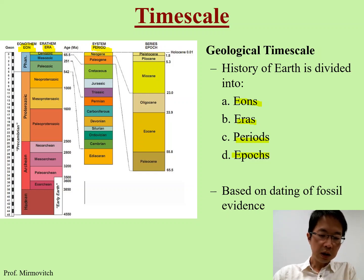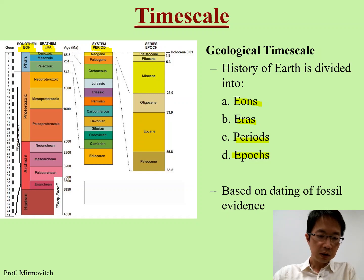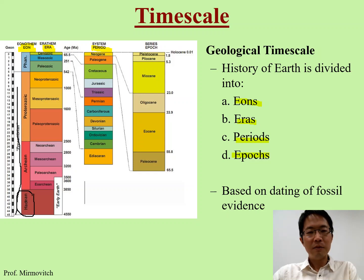Other eons are not divided into different periods. We do divide them into different eras, but not the earliest one. Why? Because the earlier the earth, the less we know about it. The more recent the earth, the more we know about it — that's how we can make more classifications about the earth.